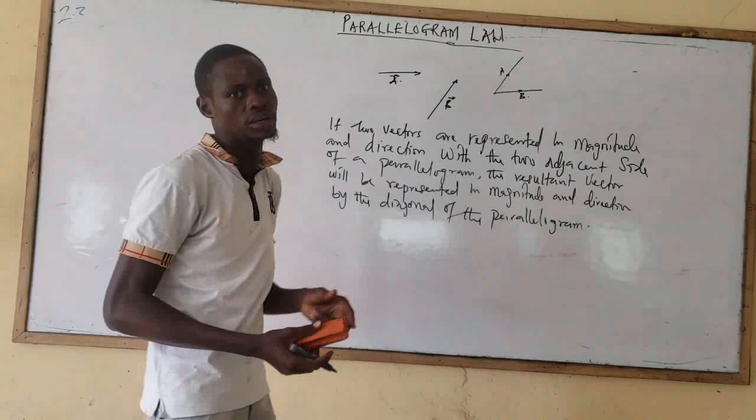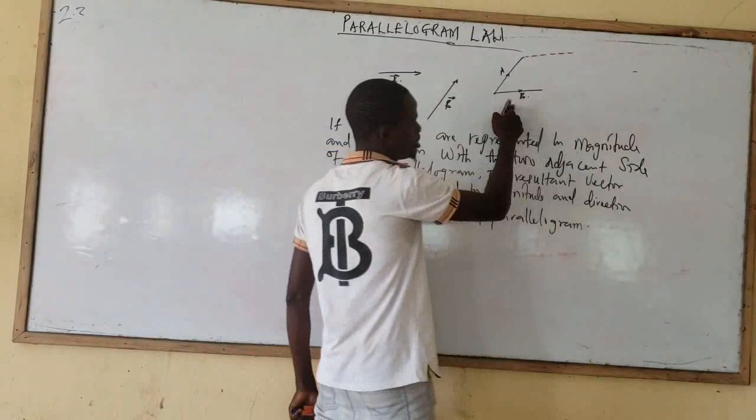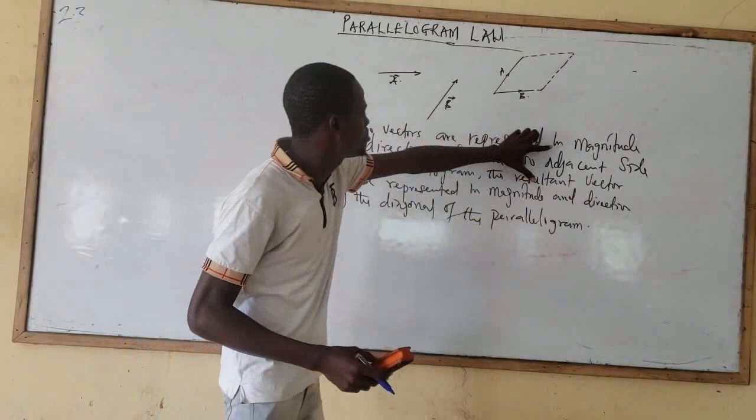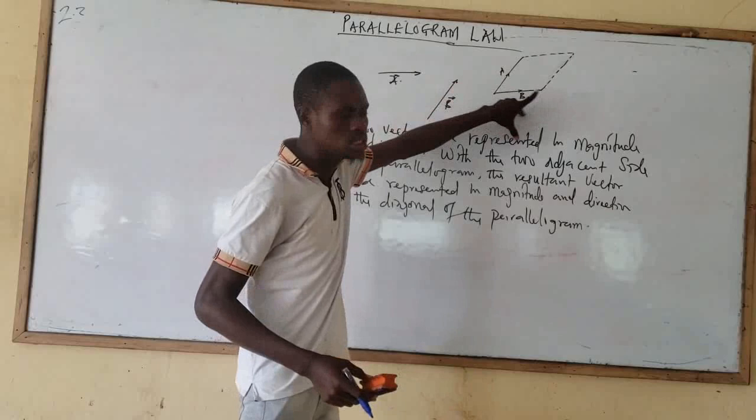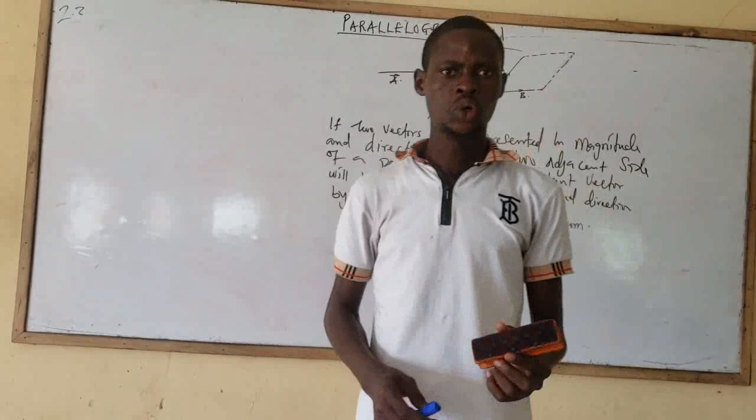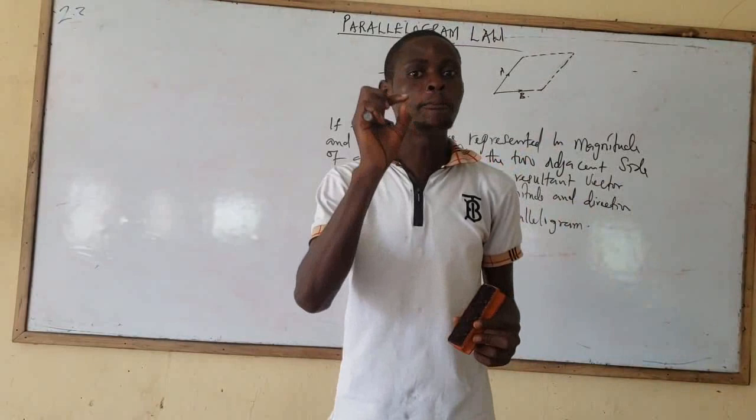If I draw a line that is parallel to vector B and a line that is parallel to vector A in this manner, these are the two adjacent sides of the parallelogram. Now the resultant vector — what is the resultant? A resultant vector is a vector which will have the same magnitude and the same point of application.